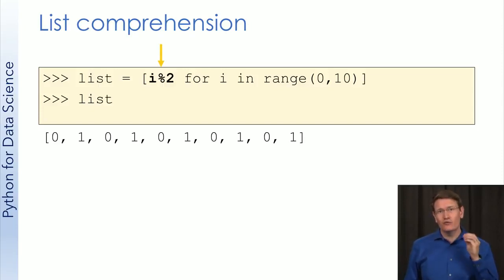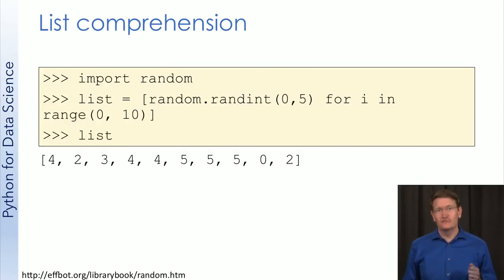What if I want a list with 10 random integers between 0 and 5? I'll have to start by importing random. Then I can use a library call for random.randint 0 through 5 10 times, and I'll get back the desired list. Hopefully you're starting to see how easy it can be to generate these lists.